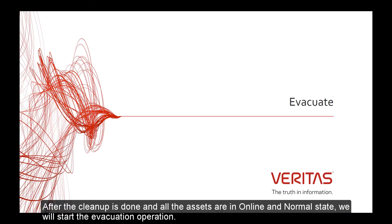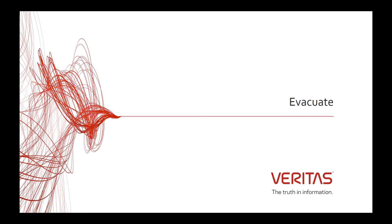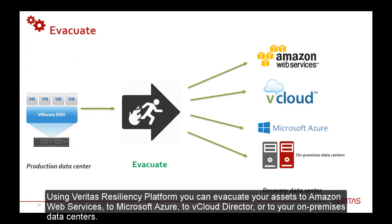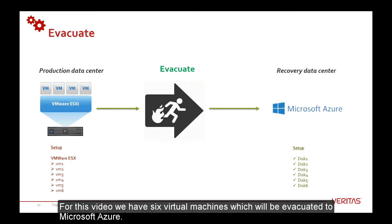After the Clean Up is done and all the assets are in online and normal state, we will start the Evacuation operation. Using Veritas Resiliency Platform, you can evacuate your assets to Amazon Web Services, to Microsoft Azure, to vCloud Director, or to your on-premises data centers. For this video, we have six virtual machines which will be evacuated to Microsoft Azure.